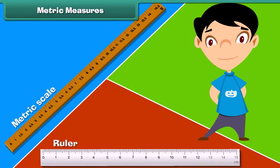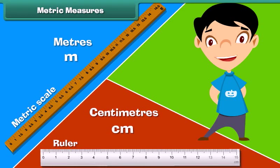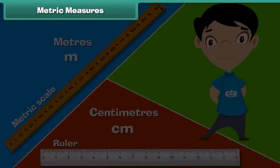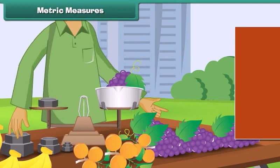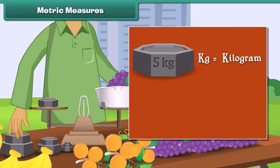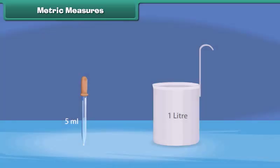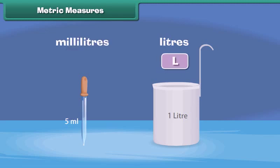Metric measures: Meter is represented by M and centimeter by CM. The weight of an object is measured in grams and kilograms. The symbol KG represents kilogram while the symbol G represents gram. Capacity is measured in liters and milliliters. L represents liter and ML represents milliliters.